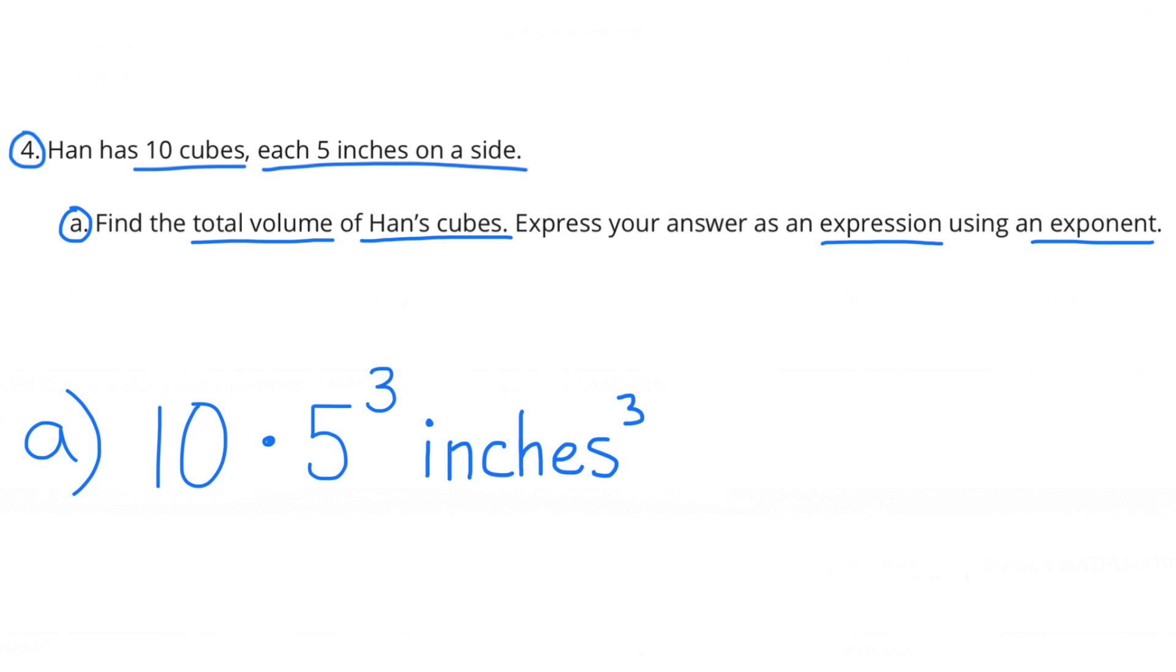A. Find the total volume of Han's cubes. Express your answer as an expression using an exponent. To find the volume of one cube, we'd have to multiply all three dimensions: height, base, and length. 5 times 5 times 5, or 5 cubed.